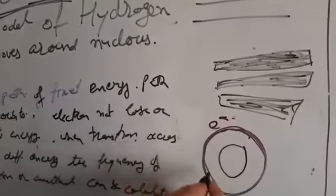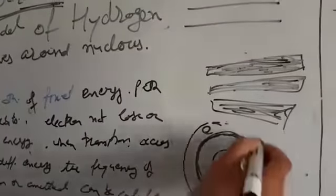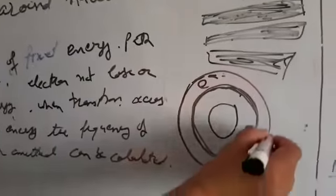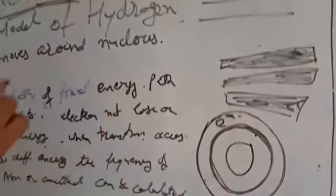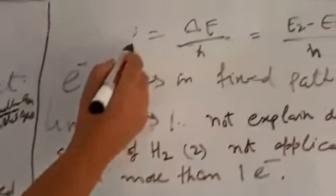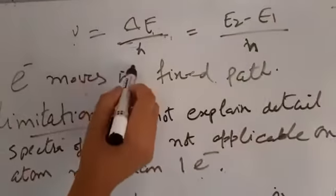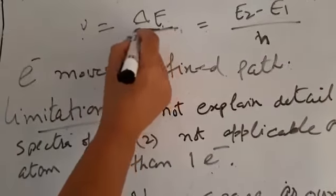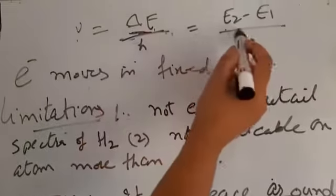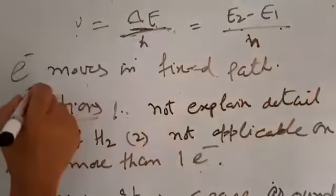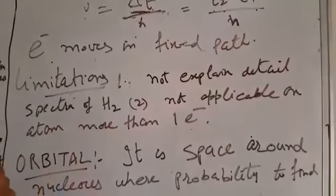Only when the transition takes place among these two different orbits, then frequency of emitted and absorbed energy can be calculated by this equation. Frequency is equal to delta E upon H. Delta E means change in energy and it is E2 minus E1. And electrons move in a fixed path according to Bohr's model.